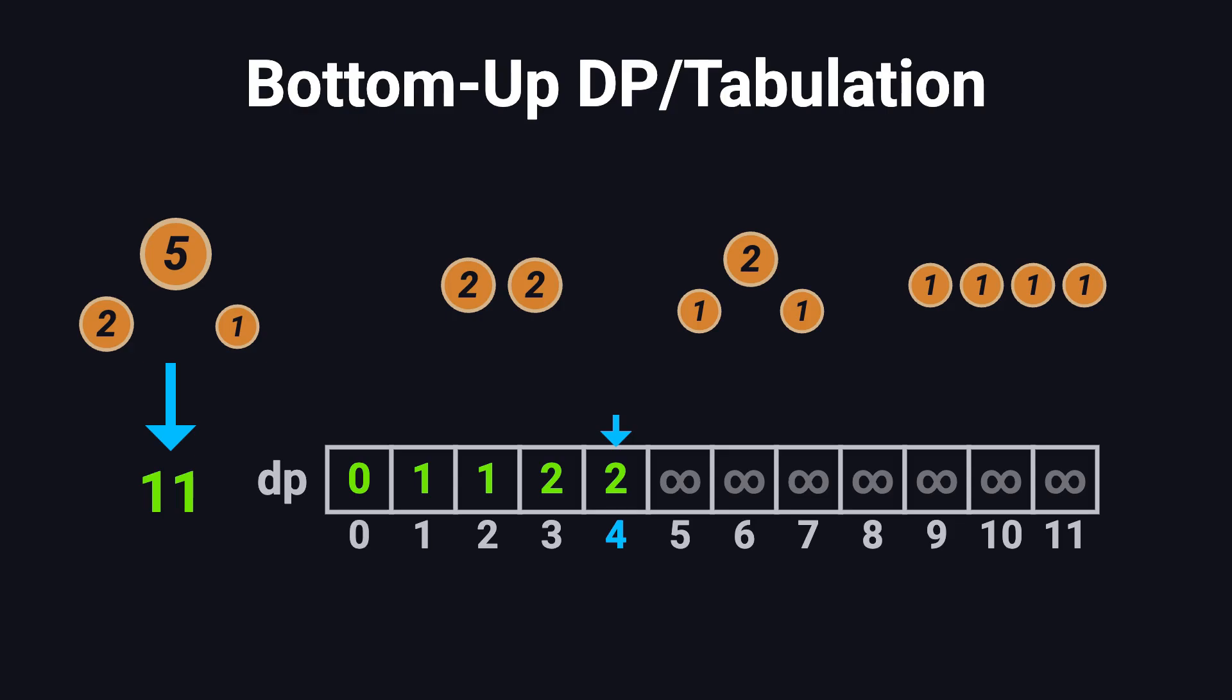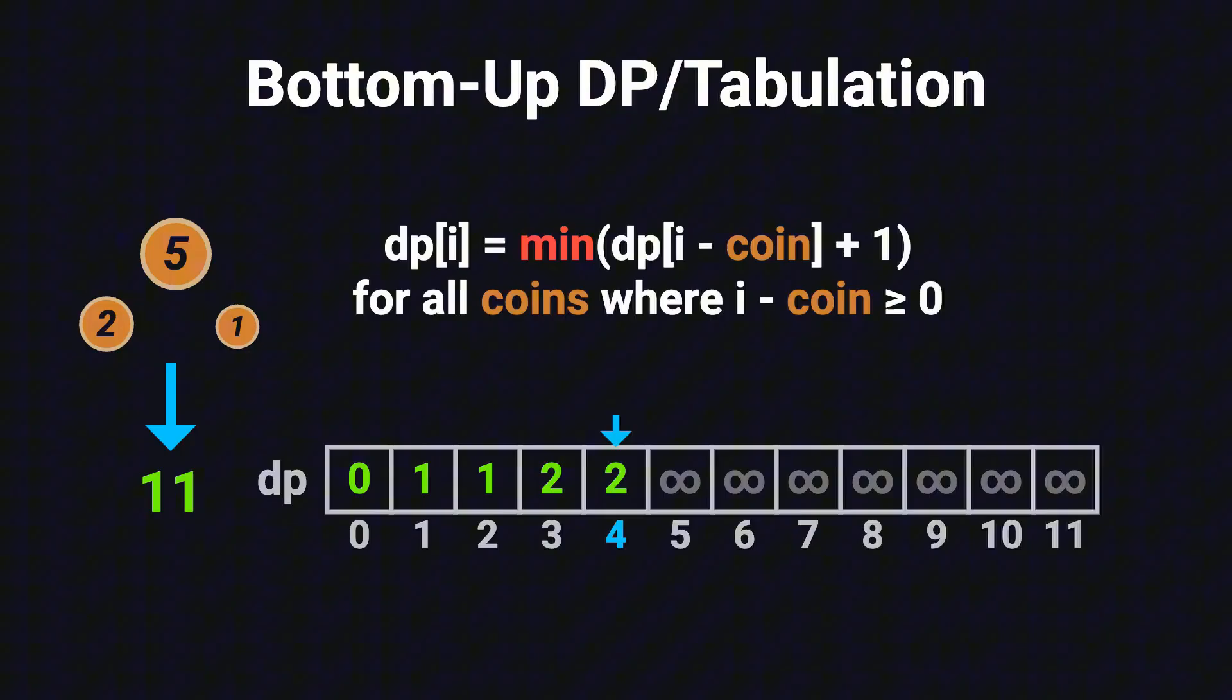So instead of brute-forcing every combination, let's use a dynamic programming formula. Here's the idea. For any amount i, we look at each coin that's less than or equal to i. We try using that coin first, which leaves us with the remaining amount i minus coin.